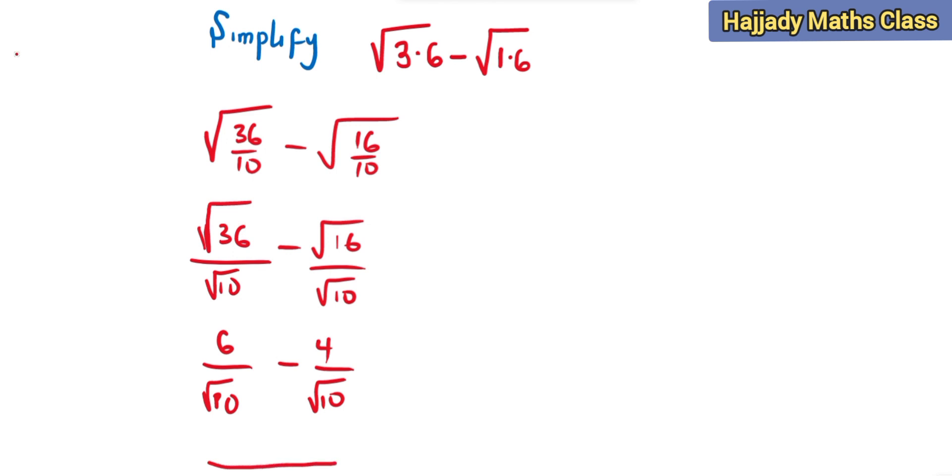And finding the LCM of these we have the LCM to be root 10. And here we have 6 minus 4. So from here we have 6 minus 4 to be equals to 2 over root 10.